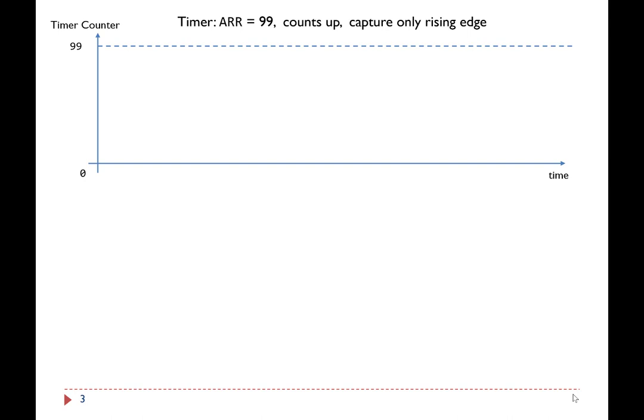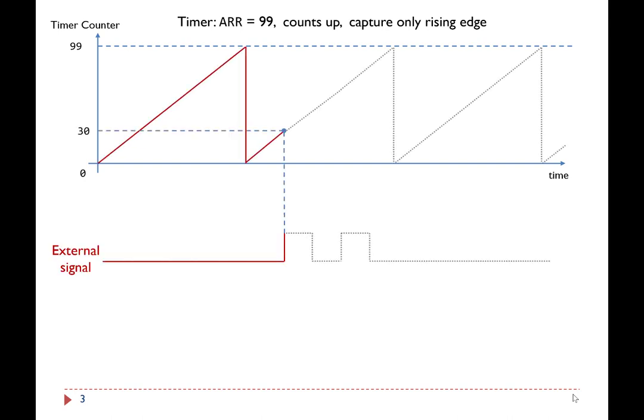When the timer hardware detects a rising edge of the external signal, two important operations are performed by the hardware automatically. First, the timer hardware copies the value of the timer counter to the capture and compare register CCR. Accordingly, hardware sets CCR to 30.